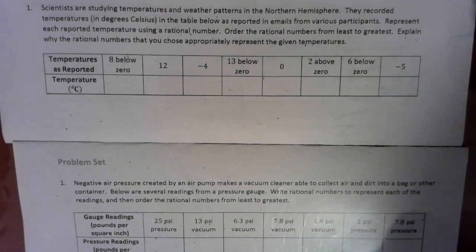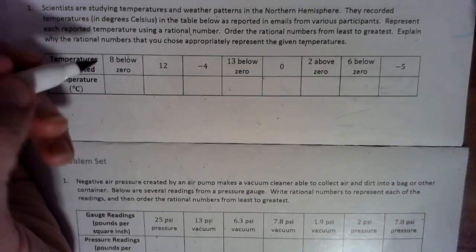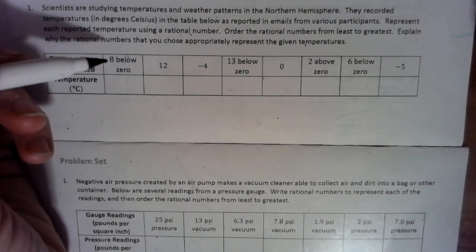So least to greatest means we want to look for the biggest looking negative number, which is the worst number possible, all the way to the biggest positive number. And we have to explain why. So as we go through this, we're looking at whether or not each are positive or negative.